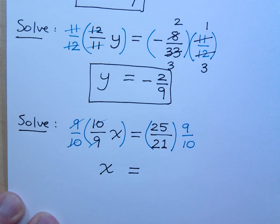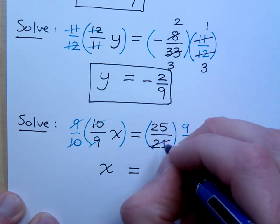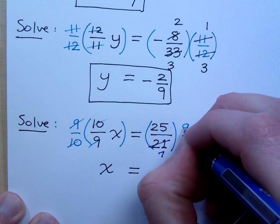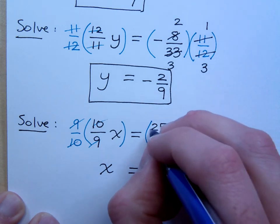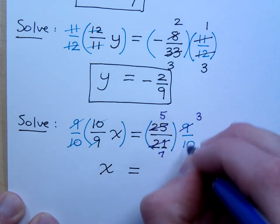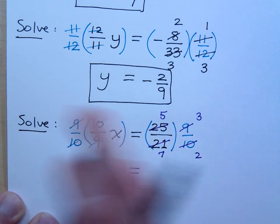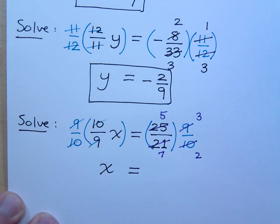I'll reduce the 21. You'll reduce the 21 and the 9 by what common factor? 3. So 3 goes into 21 7 times, and it goes into 9 3 times. Is there any other simplifying I can do? 10. 10 and 25 have a common factor of? 5. 5 goes in here? 5. And in here? 2. Is there anything else I can simplify away here? No.